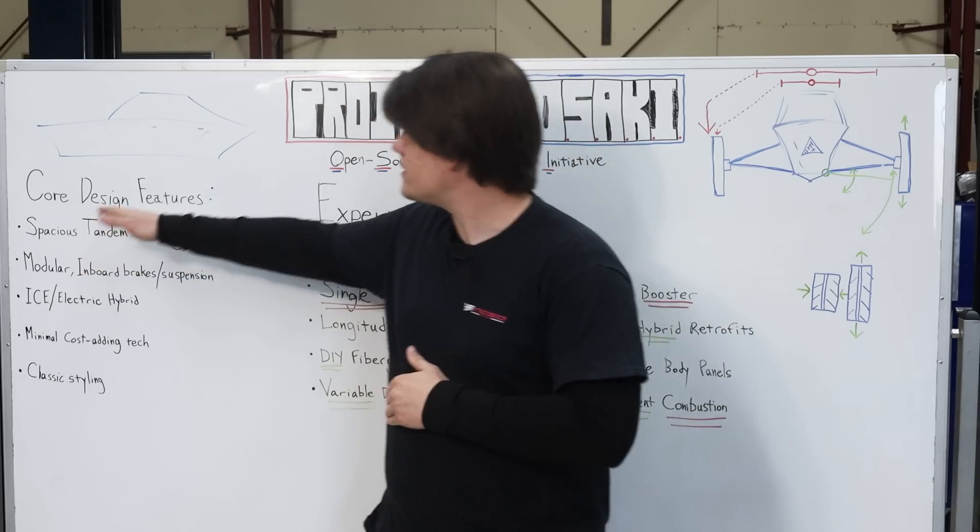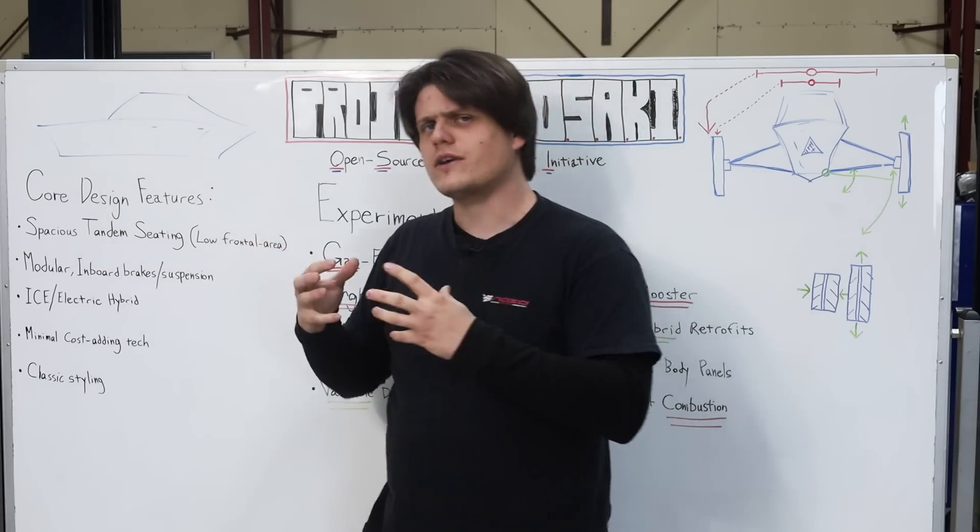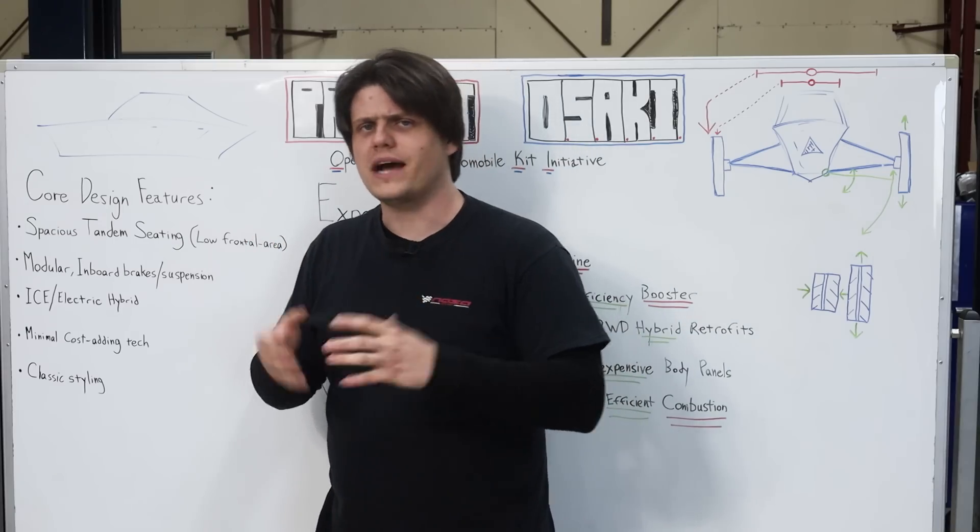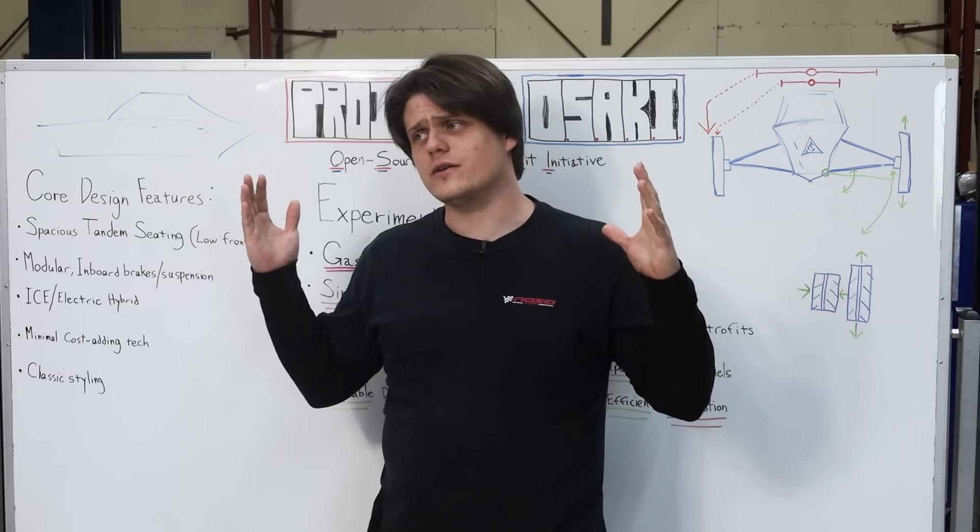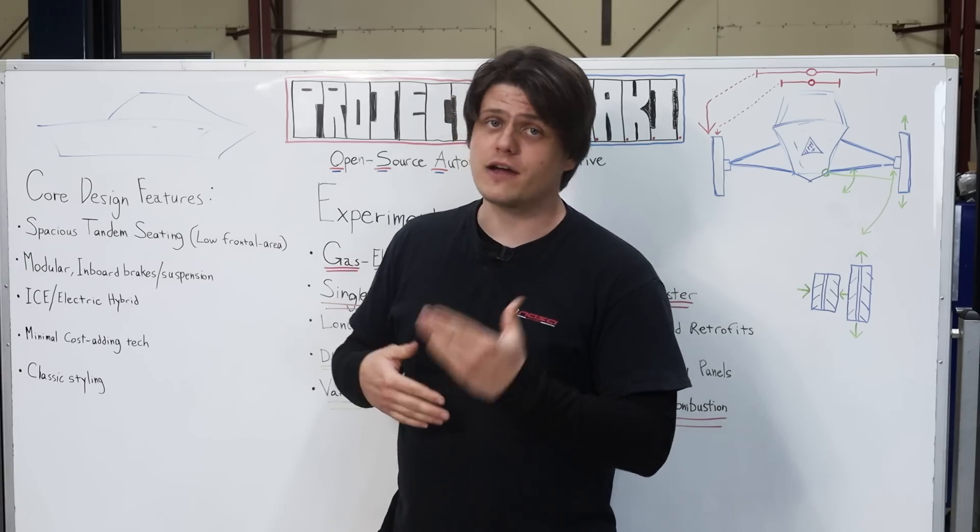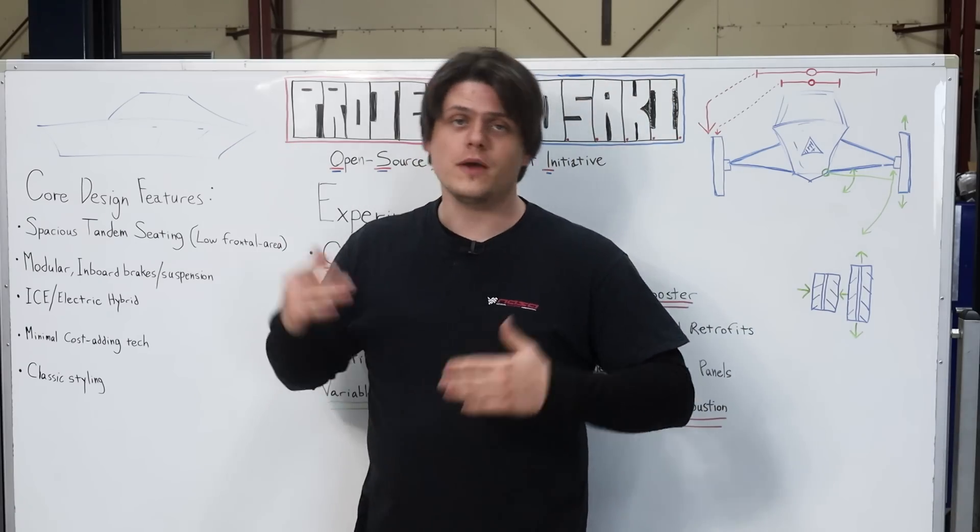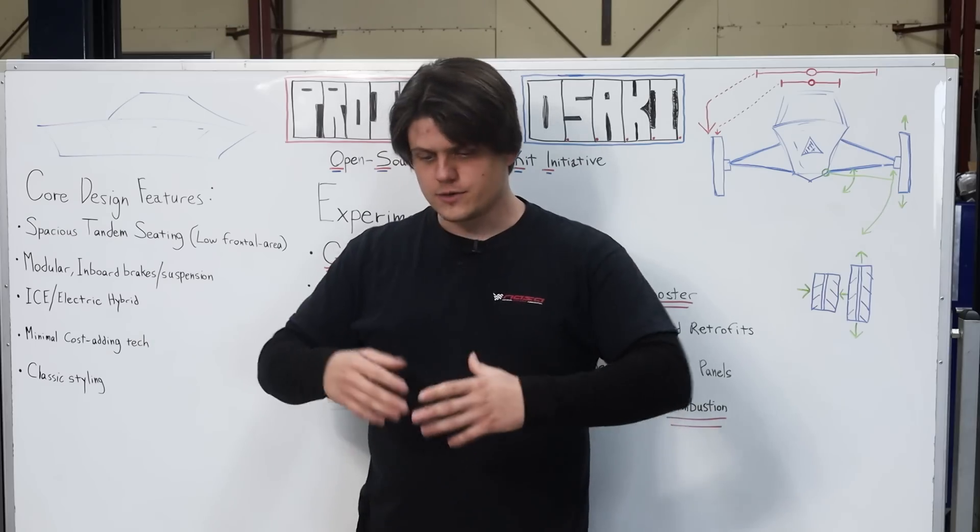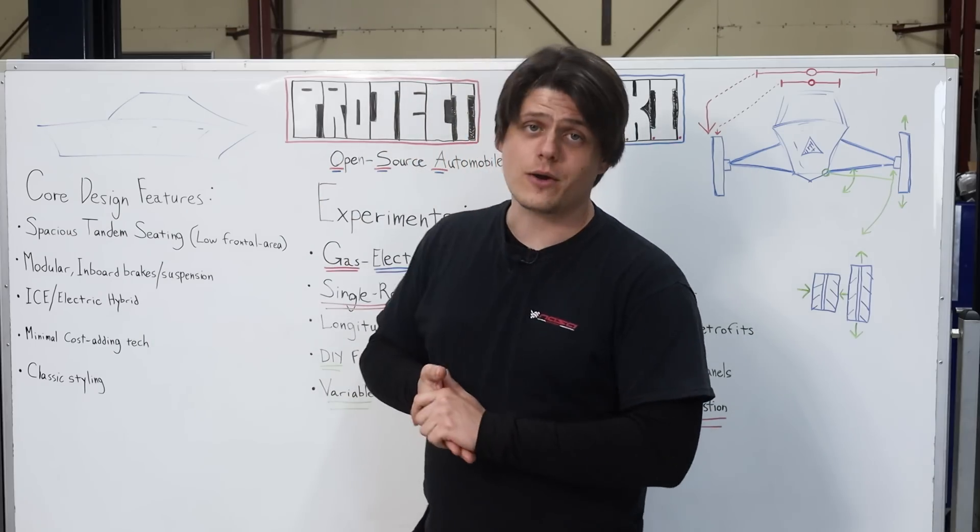But we don't want it to be cramped, right? It's tandem seating, it's easy to envision this as a cramped driving compartment, passenger compartment. We want to keep it spacious, so we're not trying to cut the width of a normal car in half, we're just trying to reduce it by maybe 35 or 40 percent. That way, you retain good elbow room, leg room, head room, and it feels like you're in a spacious driving environment, despite the fact that it's so narrow.